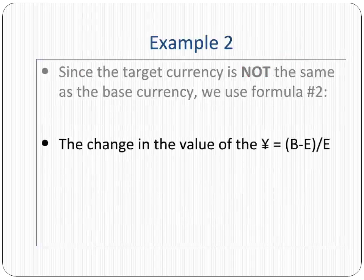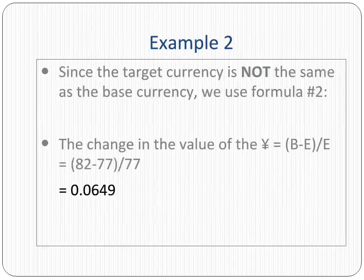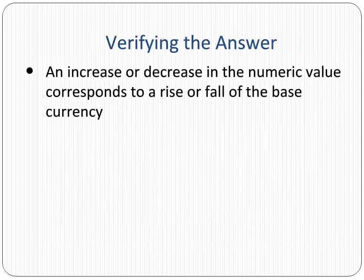The change in the value of the yen equals the beginning value minus the ending value over the ending value. That equals 82 minus 77 over 77, or 0.0649, or 6.49%. Here is a tip to verify your answer.